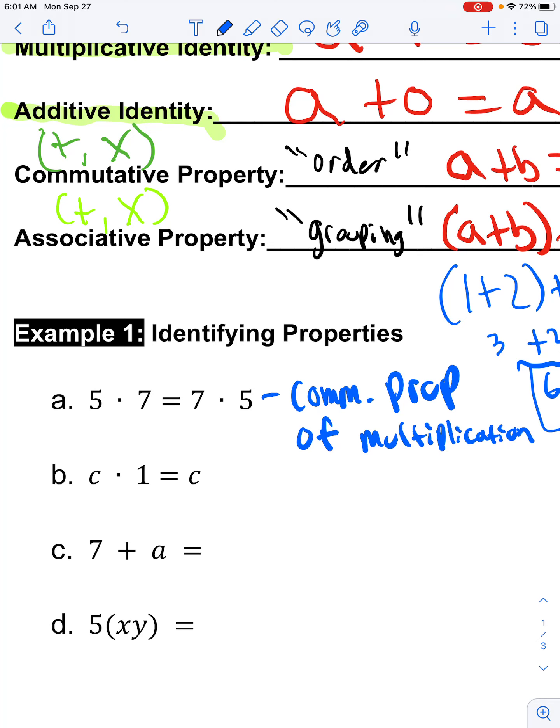C times one equals C. That is our multiplicative identity.